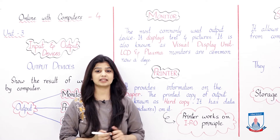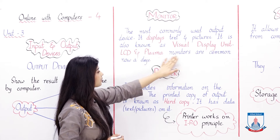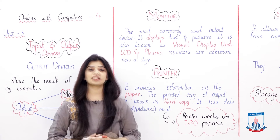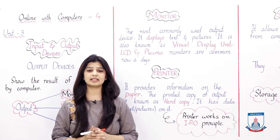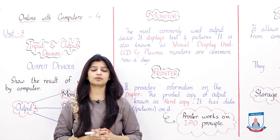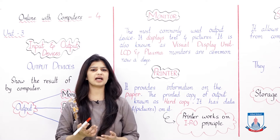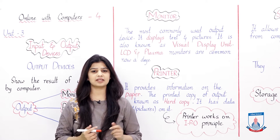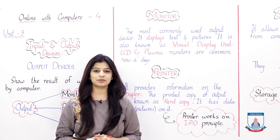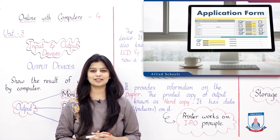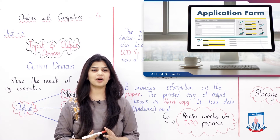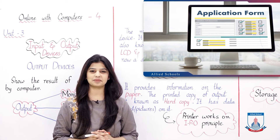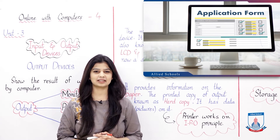We call it VDU — Visual Display Unit. It is a device that displays text and pictures. LCD and plasma monitors are common nowadays. The monitors we use most are LCD and plasma monitors. These are the types of monitors. See the picture on your screen — this is an LCD monitor. These monitors are usually used in our homes and computer labs.